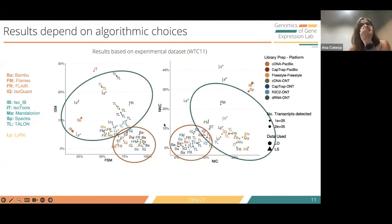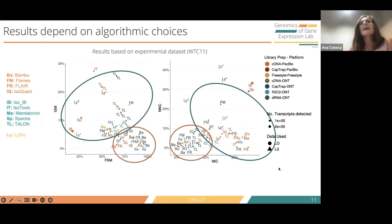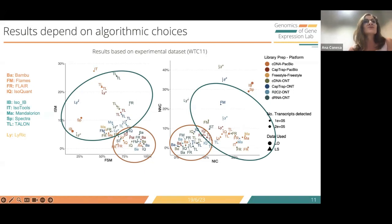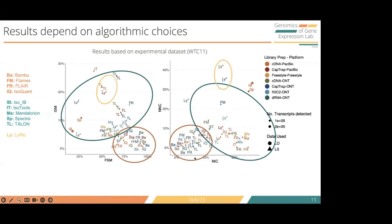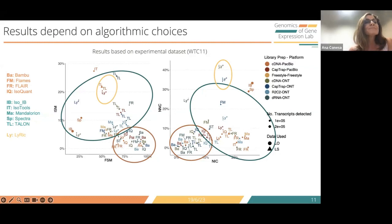Another set of tools is broader in the diversity of transcript types, with different combinations of full splice matches representing the reference, incompletes, and also novel aspects of the data. These tools are guided by the reference but not using it as such strong support. The Lyric method was very interesting because it had the highest number of novel not-in-catalog transcripts, so it was able to detect more novelty.